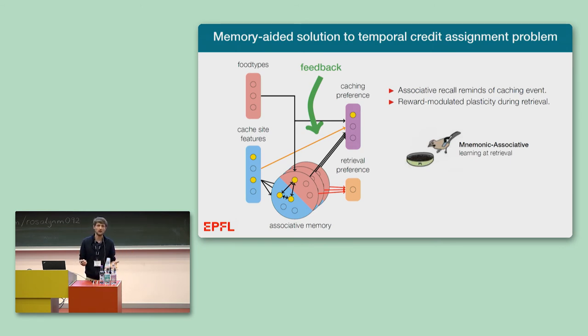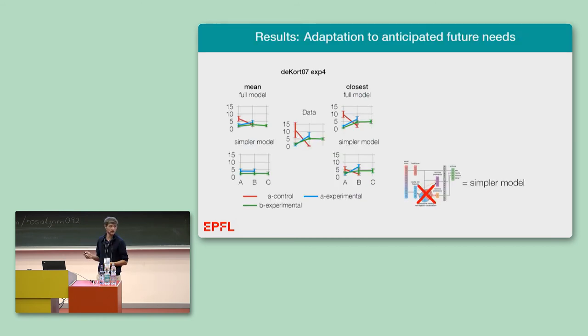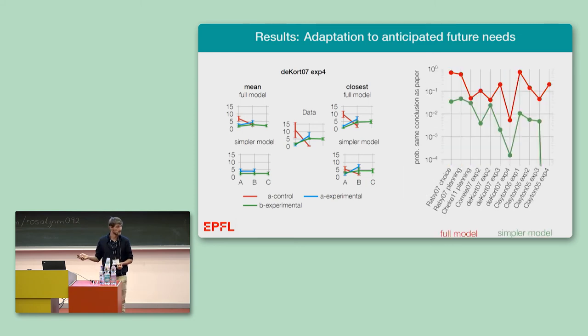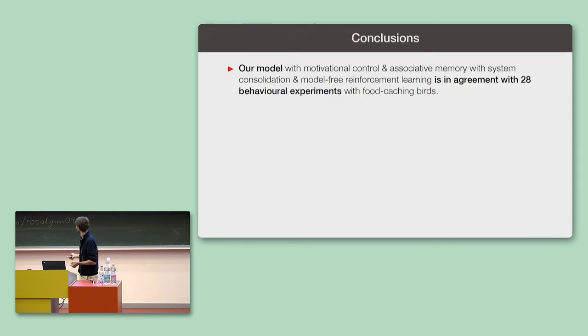This is in agreement with the mnemonic associative account that I introduced to you in the introduction. And of course, we cannot rule out mental time travel for these experiments. In fact, when I started to work on this project, I hoped that I would find something like mental time travel. It would just be cool, right? But we can say that this simple mechanism is enough to account for the experimental results that we see on the adaptation to anticipated future need, where, again, the simpler model cannot do the task.